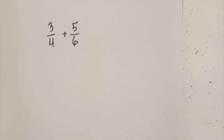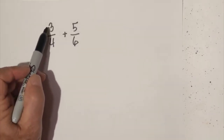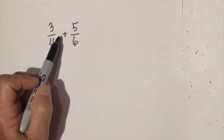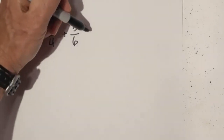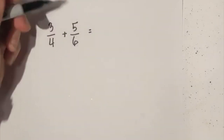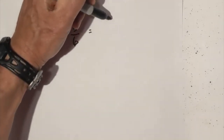Welcome to Moo Moo Math and Science. In this video, let's add three-fourths plus five-sixths. So let's go ahead and get started. First thing we need to do is find a common denominator.